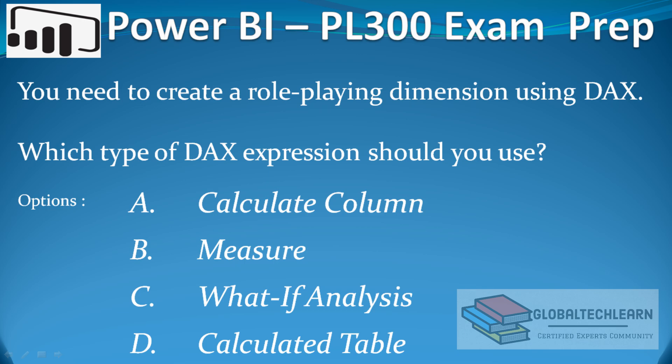Option B is a measure, which returns only a single value, not a complete table — so that will not work either. Option C, what-if analysis, is related to parameters and will not help. That leaves option D: calculated table, which will return a full table and is the correct answer.